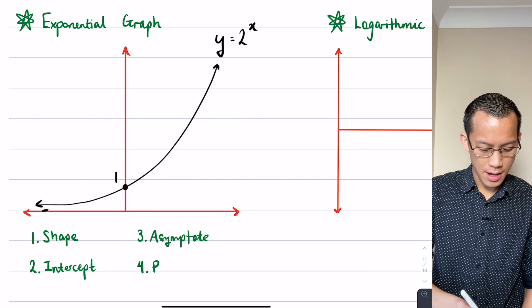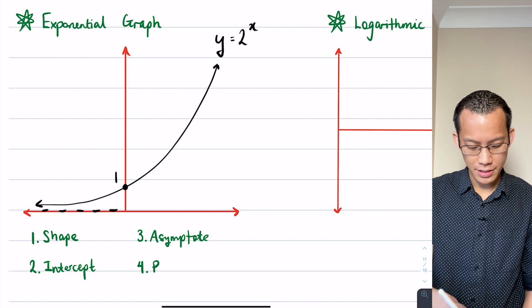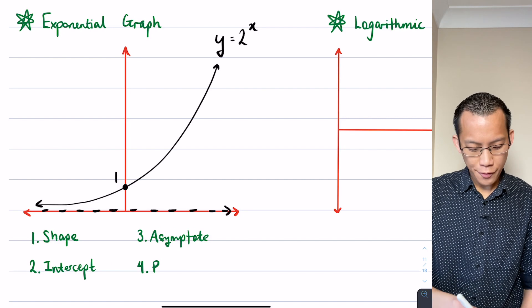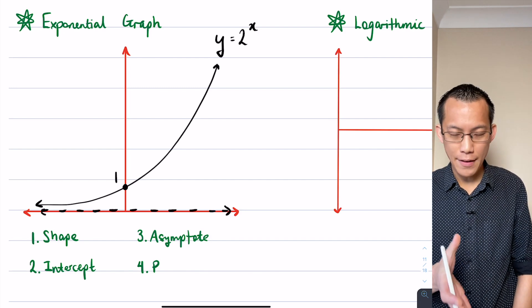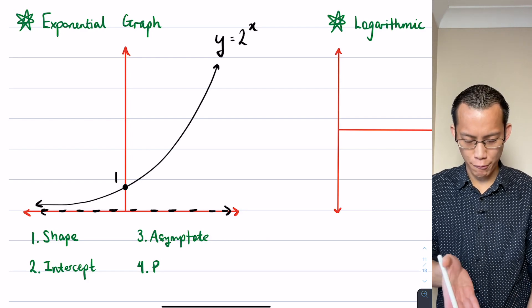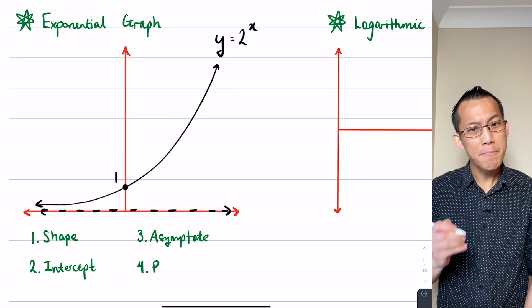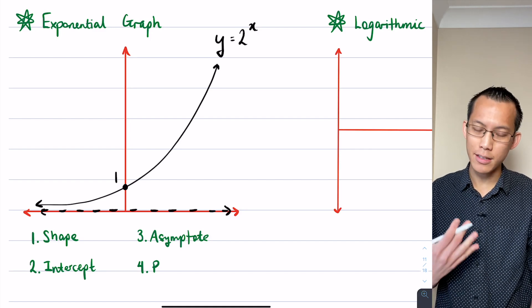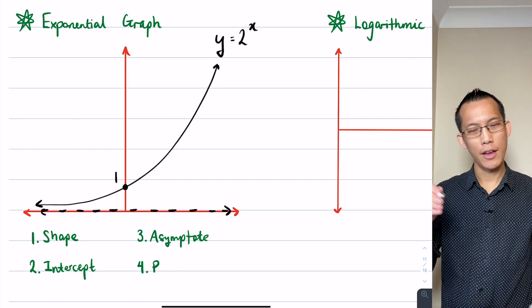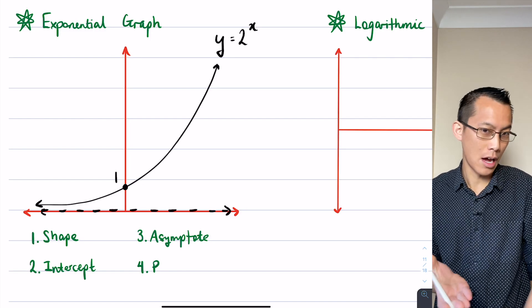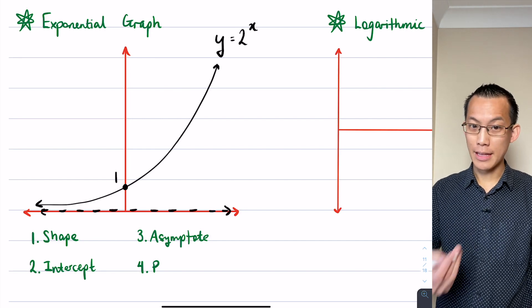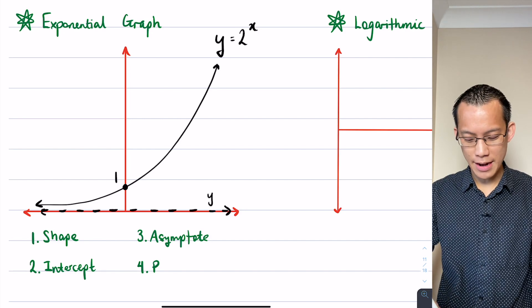You need to number one draw the asymptote in, and number two actually tell us what the equation of the asymptote is. You can see it there nestled along the x-axis. Make sure that your asymptote is clearly visible either in thick lines or just slightly off of the axis so that we can see it. Let's go ahead and write down its equation: y equals zero.